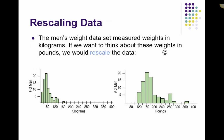For example, the men's weight was measured in kilograms, but if we want to think about weights in pounds instead, we would just rescale the data by multiplying every value by the conversion factor. The shape doesn't change — it's still unimodal and skewed to the right. However, everything else did change by that multiplier: the mean, the standard deviation, and the range all changed by that conversion factor, so the spread becomes larger.